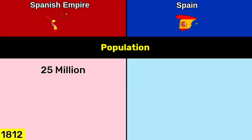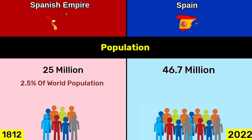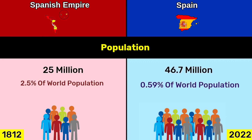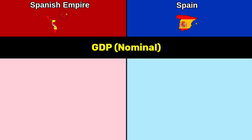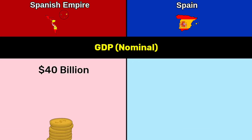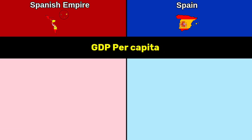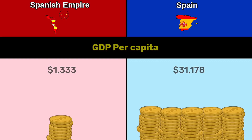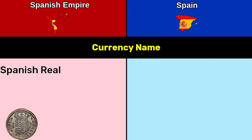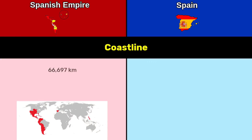Population: Spanish Empire 25 million, 2.5% of world population. Spain: 46.7 million, 0.59% of world population. GDP nominal: Spanish Empire 40 billion dollars; Spain 1.57 trillion dollars. GDP per capita: Spanish Empire 1,333 dollars; Spain 31,178 dollars. Currency: Spanish real and Spanish dollar for the Empire; Spanish peseta and Euro for Spain.